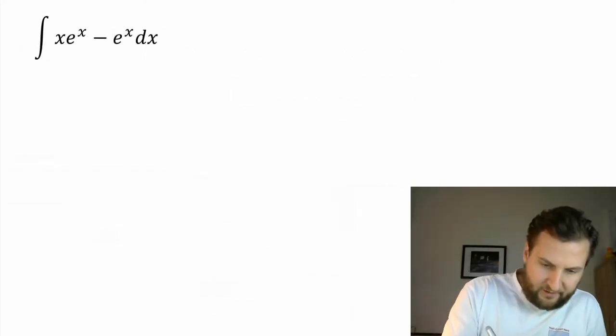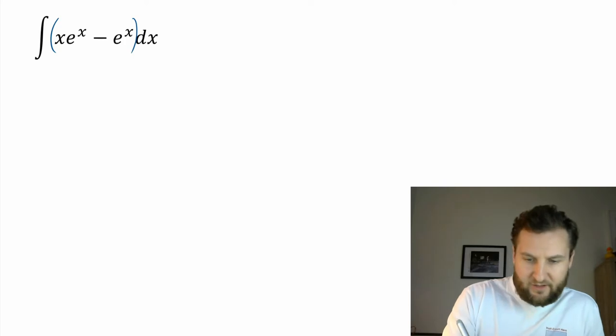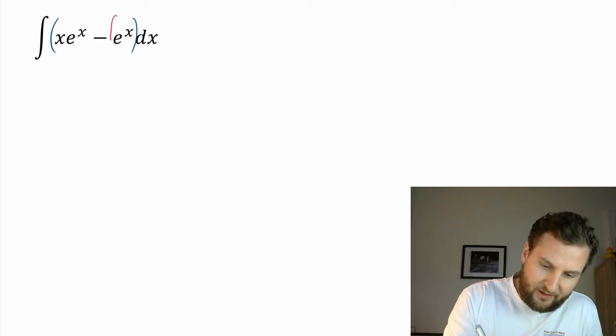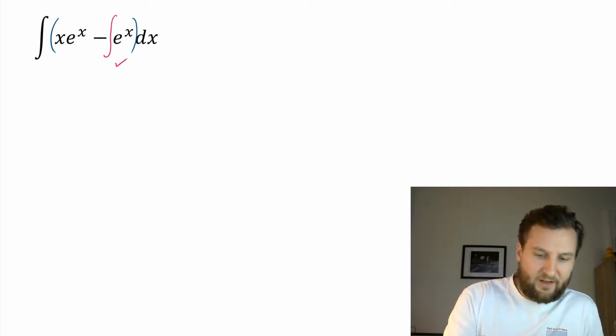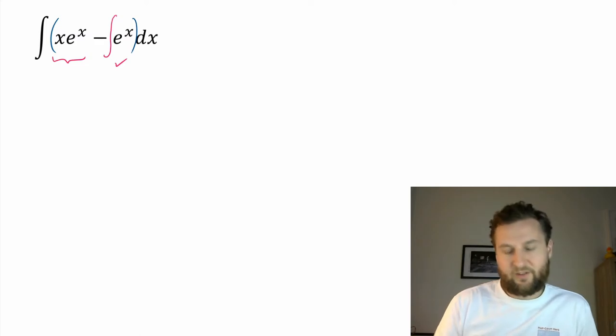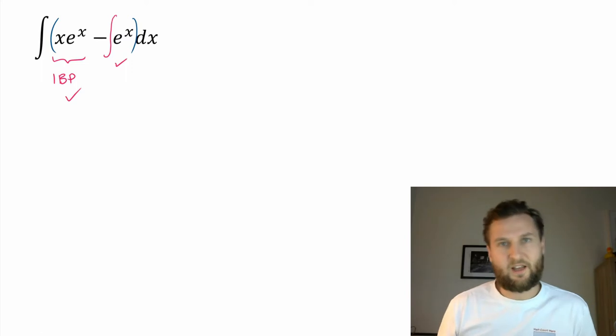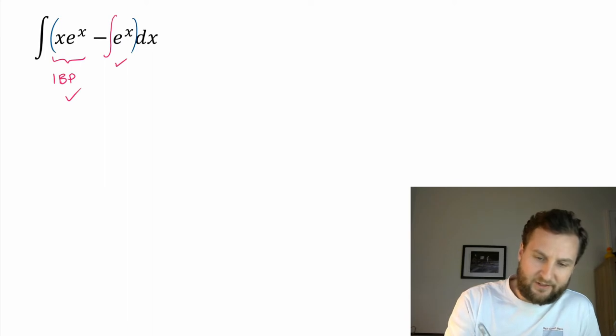All right, so here we have this integral: xe^x - e^x. Now the first strategy that you might want to do is split this into two terms. You could say minus the integral of e^x, and we already know that one. This one we've actually already seen, and we used integration by parts to get there as well. So I'm not going to do it that way. What I'm going to actually do is notice the common factor here, e^x.